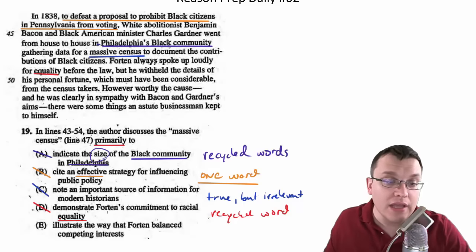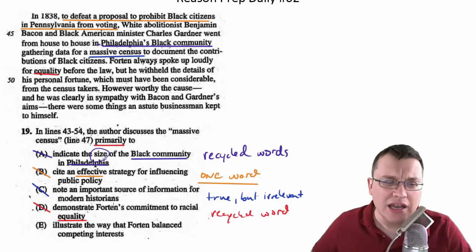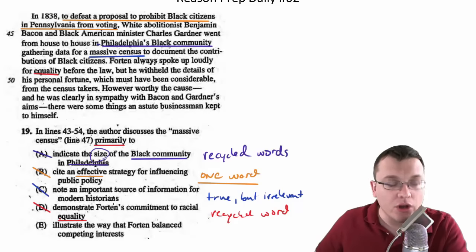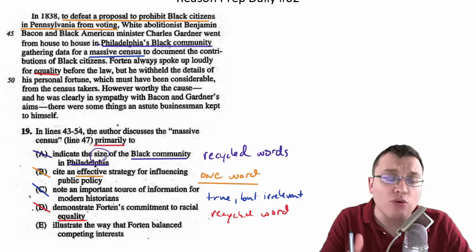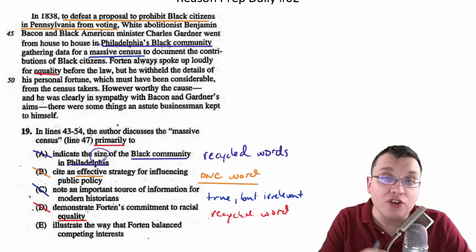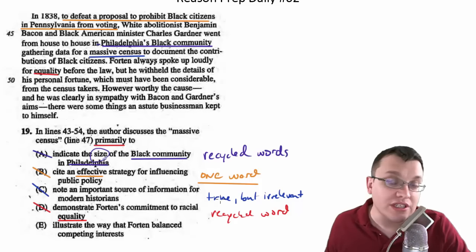Last choice — Choice E: illustrate the way that Fortin balanced competing interests. At first glance, E seemed weird, irrelevant, kind of strange. That's not a coincidence, because that's exactly what the College Board is trying to do. Their goal — if they want you to get questions wrong, they're trying to make questions hard. How? Either by making the right answer seem boring, innocuous, and inconspicuous so you don't pay attention to it, or by making the trap choices look more attractive using recycled words, a choice that looks good except for one word, or a choice that's true but irrelevant.